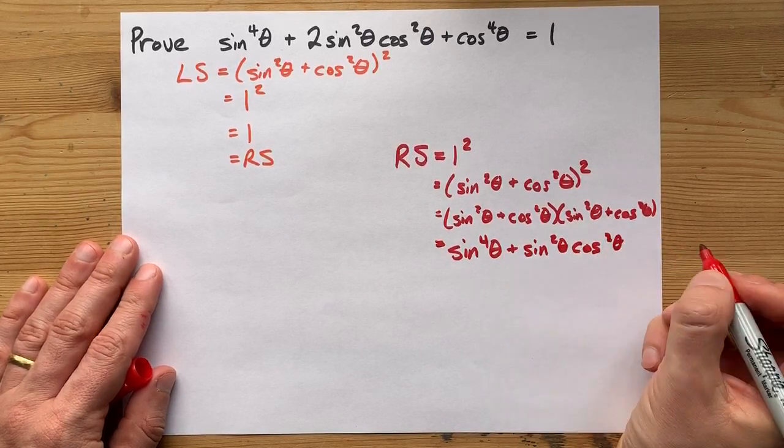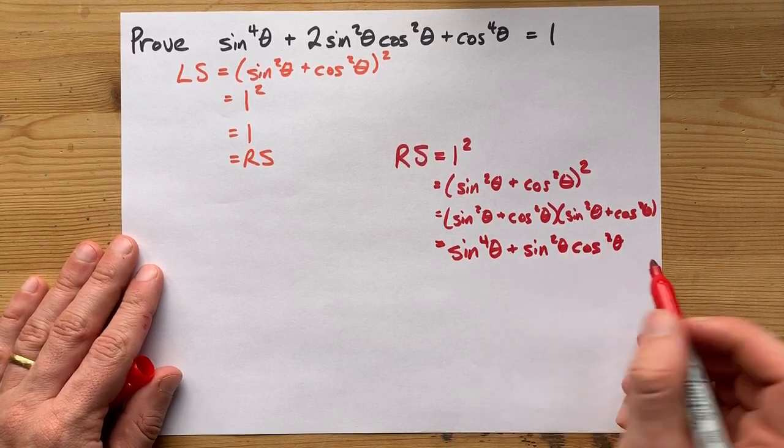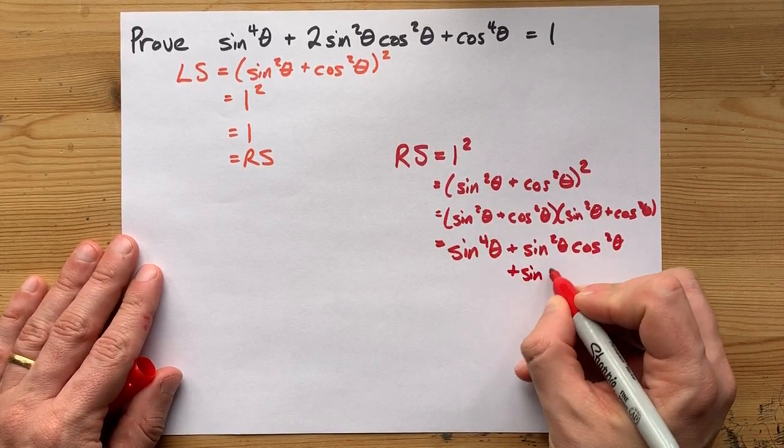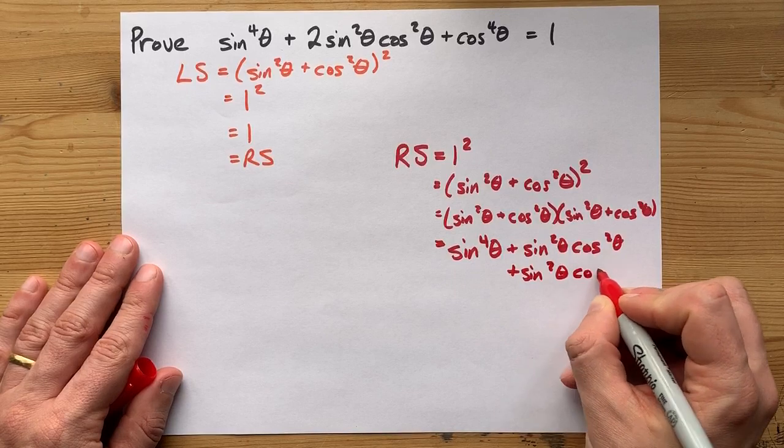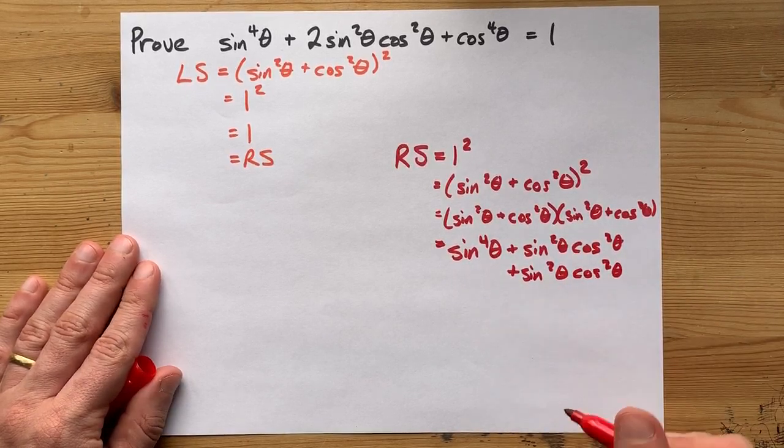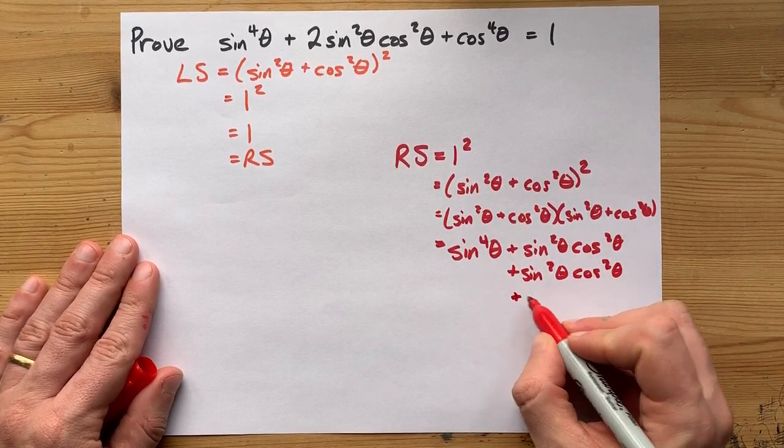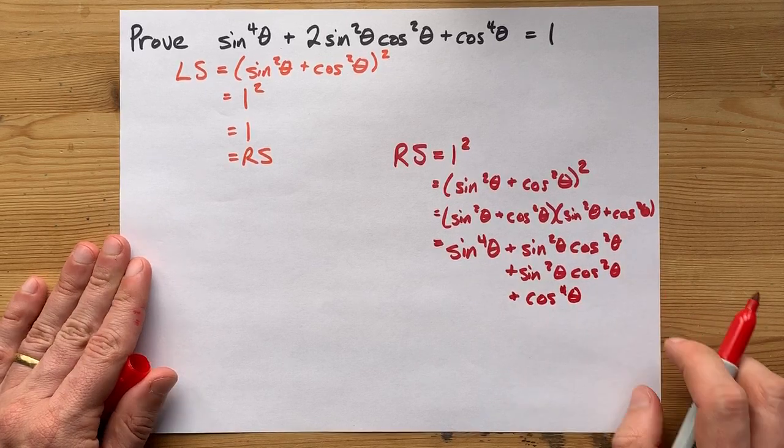Cos²θ times sin²θ is the same thing. I'm just going to rewrite it in that order. We just write sin²θ ahead of cos²θ by convention. And then cos²θ times cos²θ gives me cos^4θ.